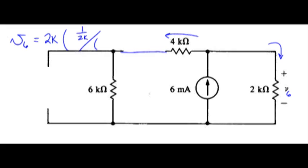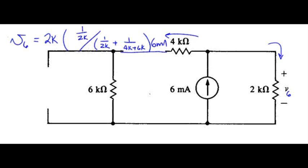Seen by that source—4k and 6k are in series—multiply that by 6 milliamps, and the current over here is pointing into the plus sign, so no additional sign is necessary.